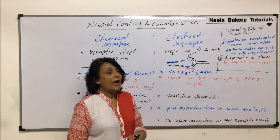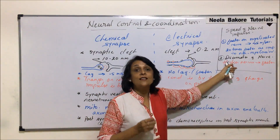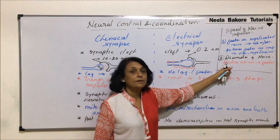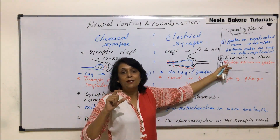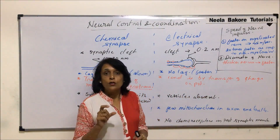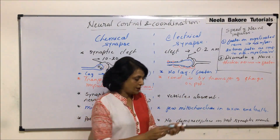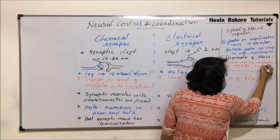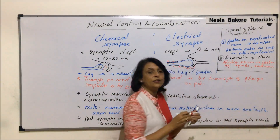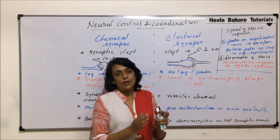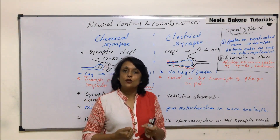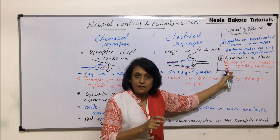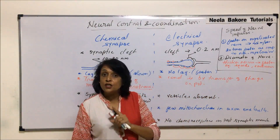In smaller animals like squids and earthworms, which have non-myelinated nerves, the diameter of those nerves is greater so that conduction can be faster. Since myelin is not present in these animals, the other method by which nerve impulse speed is increased is through greater diameter — more diameter means less resistance, leading to faster impulse conduction.